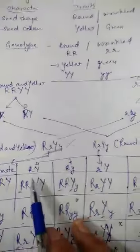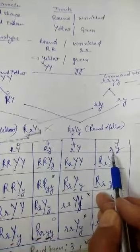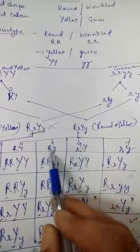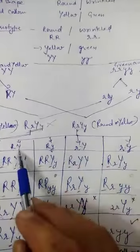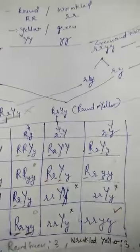I am also showing you the dihybrid cross in the notes which I have already sent in the previous video. These four gametes of the dihybrid cross — two are parental combination gametes and two are recombinant gametes. So these four gametes are possible only when crossing over takes place.